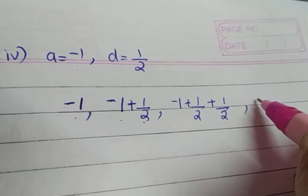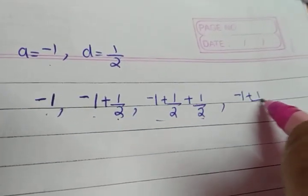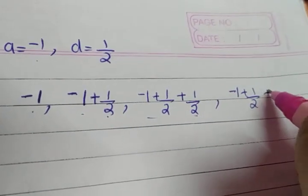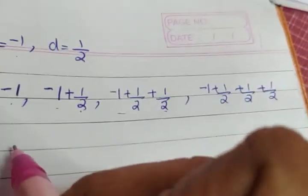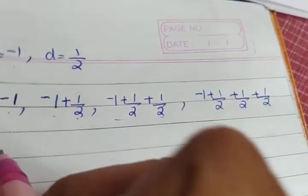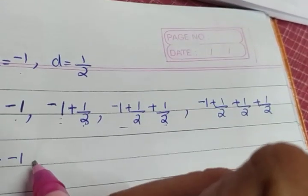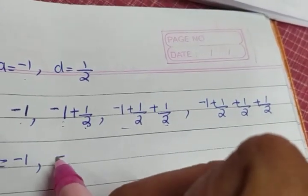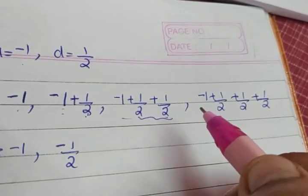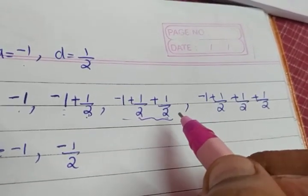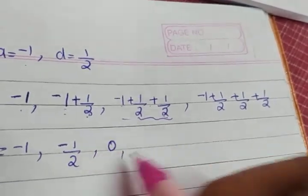To find the next term, third term plus d. The third term is minus 1 plus 1 by 2 plus 1 by 2, and we add d which is 1 by 2. So that gives minus 1, and minus 1 plus 1 by 2 gives minus 1 by 2, and 1 by 2 plus 1 by 2 together gives 1. So minus 1 plus 1 gives 0.